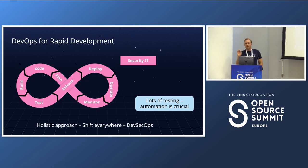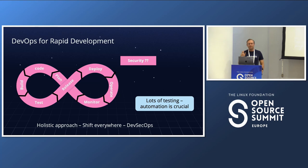The important thing to note is that when we develop so rapidly, testing needs to be automated because we cannot do this manually when we do it so often. It's very crucial to have automatic tools and automatic testing in place.